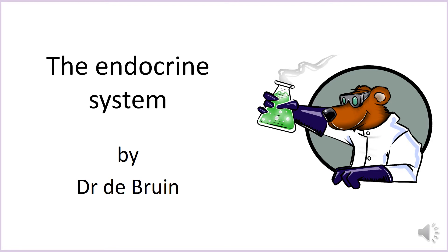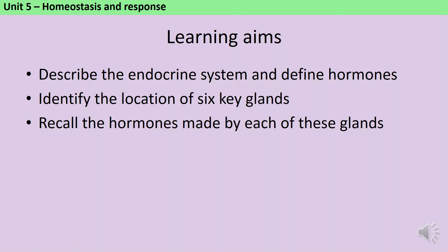This is a revision video about the endocrine system, which comes up in GCSE Biology as part of the homeostasis and response unit. By the end of this video, you should be able to describe the endocrine system and define what is meant by a hormone. You should know the location of six key glands in the human body, and you should be able to recall the hormones made by each of these glands.